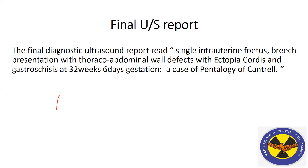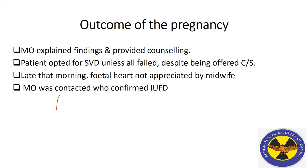The final report read: single intrauterine fetus, breech presentation, with thoraco-abdominal wall defects including ectopia cordis and gastroschisis, at 34 weeks 6 days — a case of Pentalogy of Cantrell. Following that second ultrasound scan, the medical officer noted the findings, explained them to the patient, and provided counseling. The patient was advised to consider accepting caesarean section given the findings.